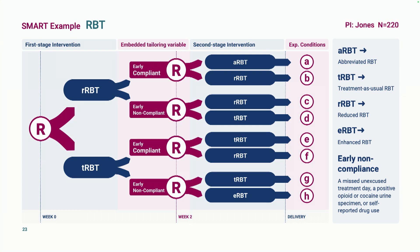If you think about the second stage as a strategy, the strategy for early compliers is to either stay the course or step down. For those identified as early non-compliant, the strategy is either to stay the course or step up the intensity. If they started in treatment-as-usual, they step up to enhanced; if they started in reduced, they step up to treatment-as-usual. This SMART is trying to figure out how to build an adaptive intervention that modulates intensity based on how participants are experiencing and complying with the intervention.